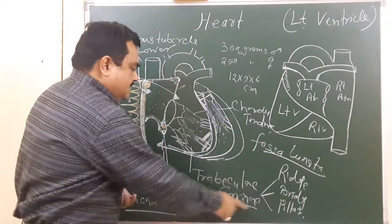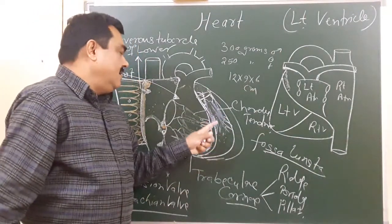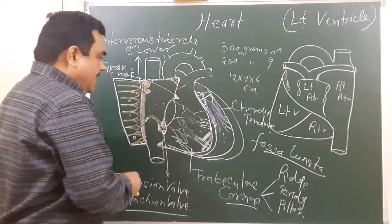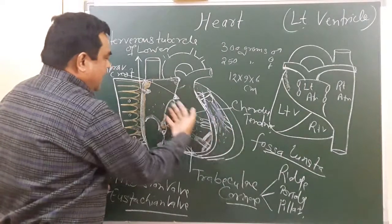to these muscles and developmentally is derived from the primitive ventricle. It's adjacent to the right ventricle, and here